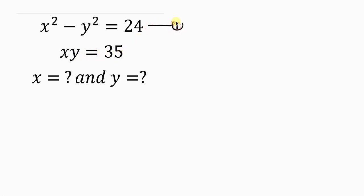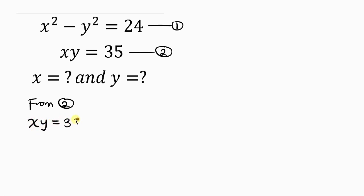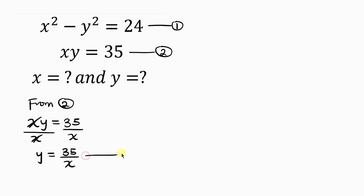I'm going to call this equation 1 and this equation 2. From equation 2, our first step will be to make y the subject, and we can achieve that by dividing both sides by x. So x times y equals 35 — dividing both sides by x, x cancels, leaving y equal to 35 over x. We'll call this equation 3.